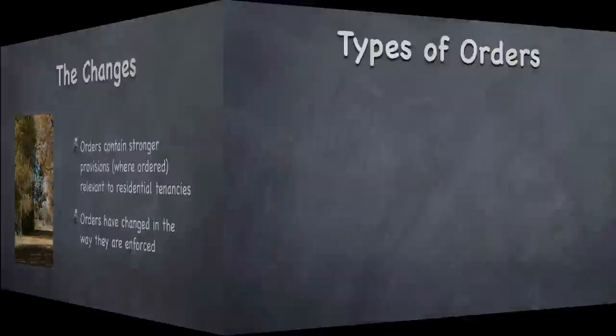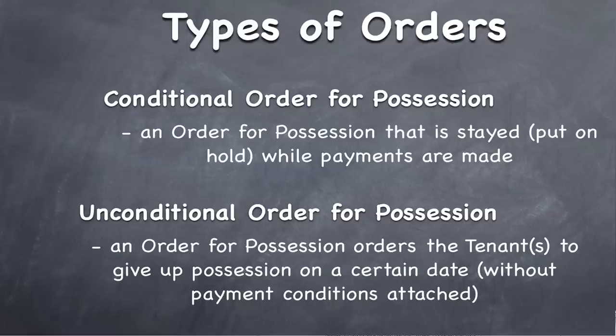There are a couple of different orders for people who are not familiar with this: Conditional Orders and Unconditional Orders. A Conditional Order for Possession is an order for possession that is stayed or put on hold while payments are made. An Unconditional Order for Possession orders the tenants to give up possession on a certain date without any payment conditions attached.